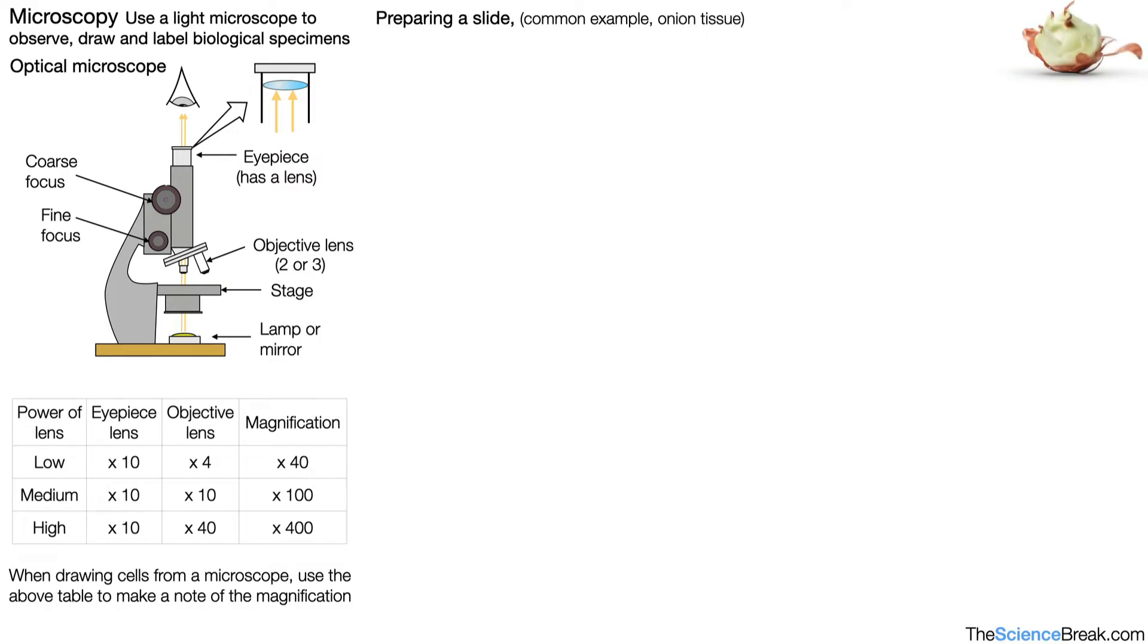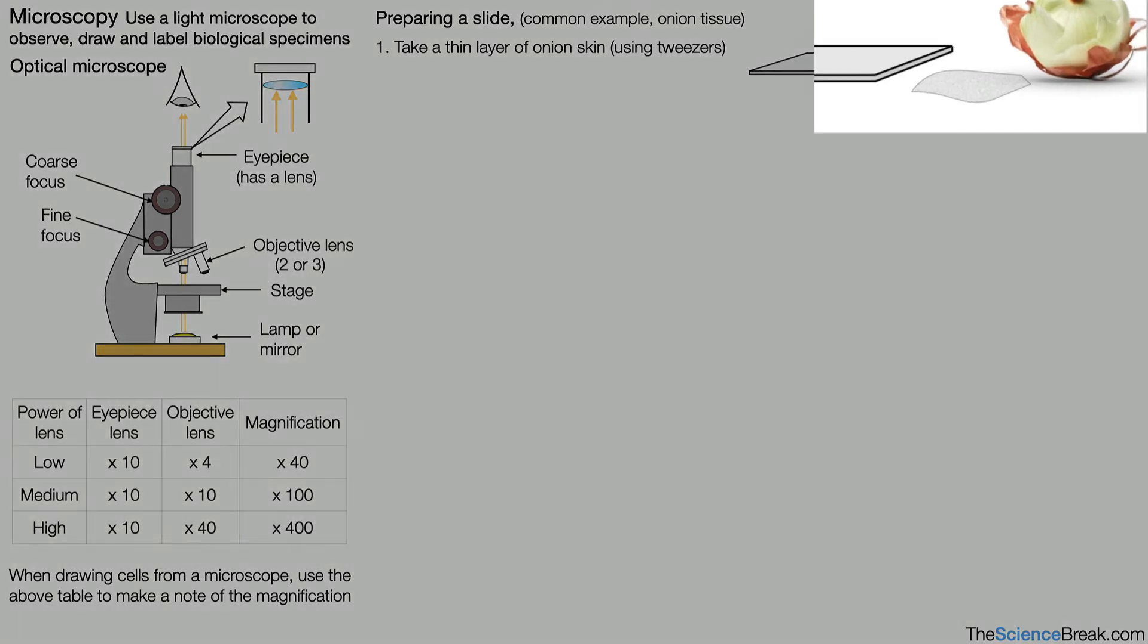Preparing a slide. A common example is onion tissue. You can see our onion on the top right hand side there. Here's a microscope slide and the first thing we do is take a thin layer of onion skin, often using tweezers or forceps. There's our thin layer of onion skin taken from our onion.